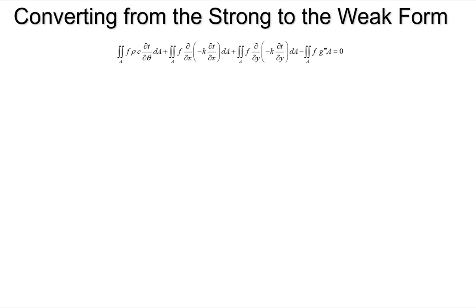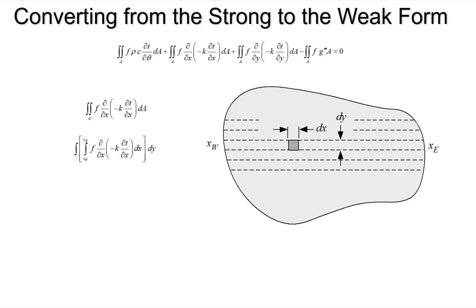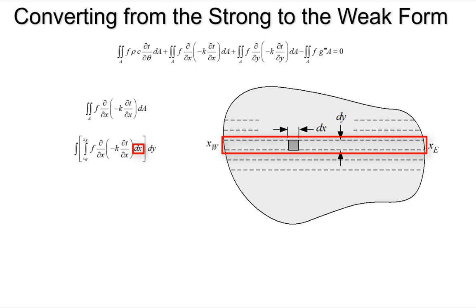Here again is the weak form split into four separate integrals — one associated with storage, two with conduction in the two directions, and one with volumetric generation. Let's focus first on the conduction term in the x-direction. This is a double integral, meaning we integrate first over x and then over y, strip by strip across the entire computational domain.